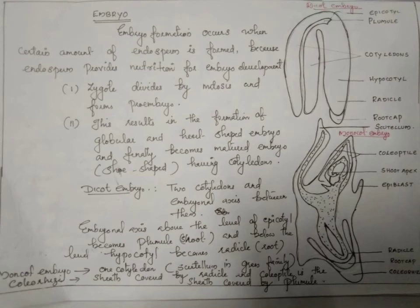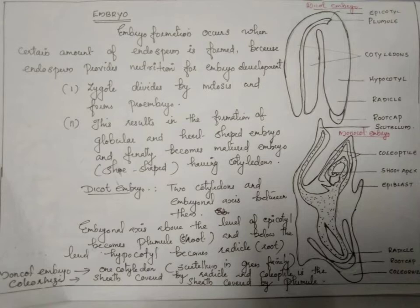The next topic is embryo formation. Embryo formation occurs when a certain amount of endosperm is formed because endosperm provides nutrition for embryo development. The first step is the zygote divides by mitosis and forms a pro-embryo. Embryogenesis, that is embryo formation, occurs during the formation of the pro-embryo, resulting in globular and heart-shaped embryo stages.